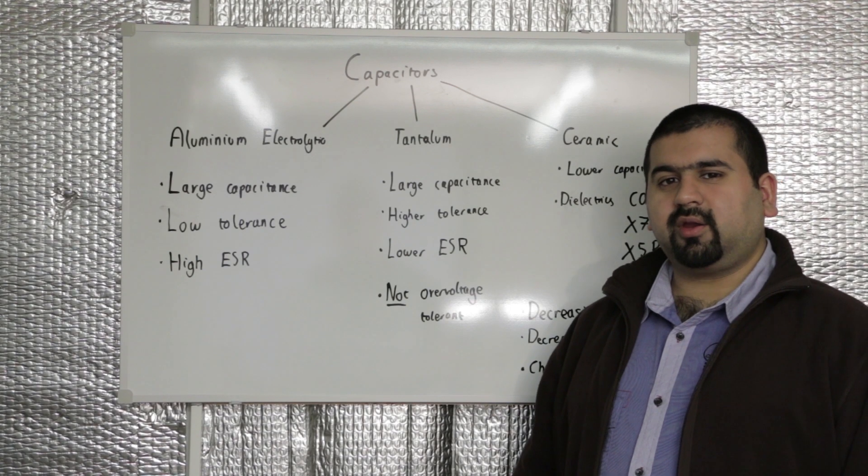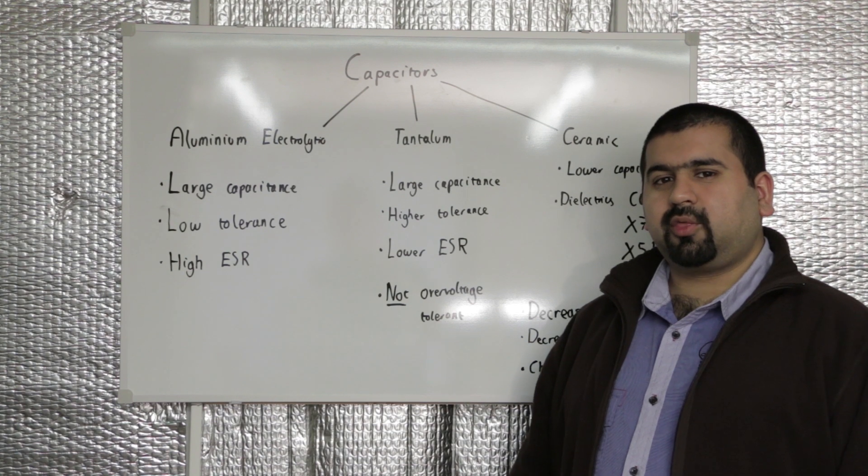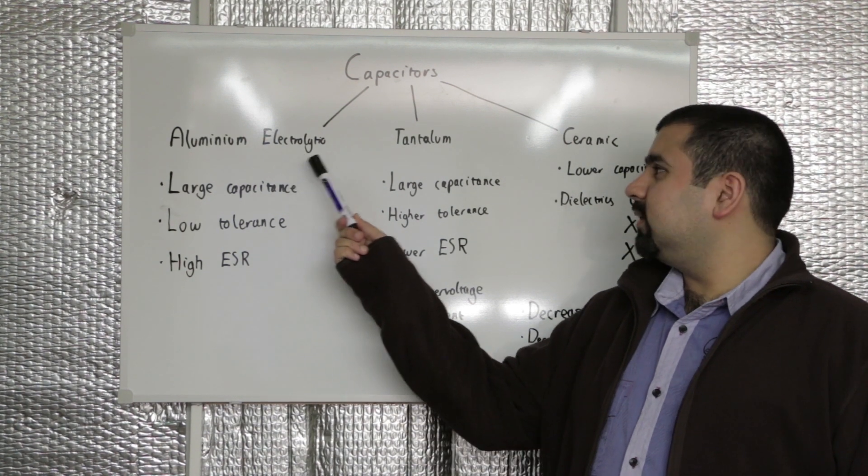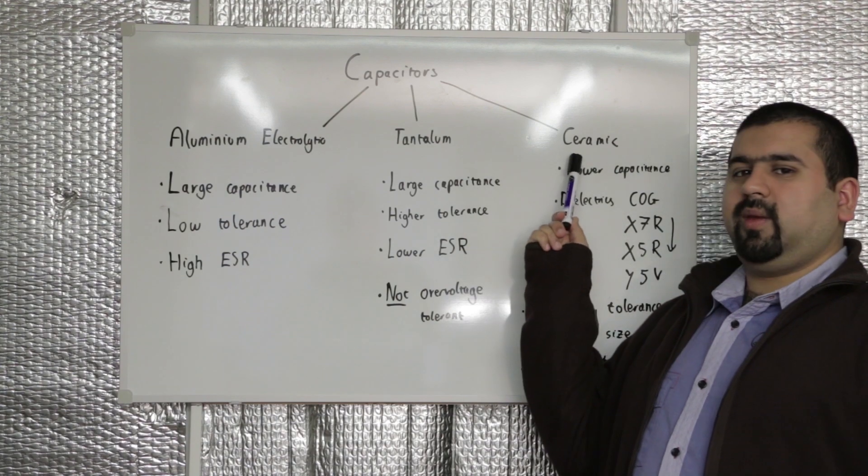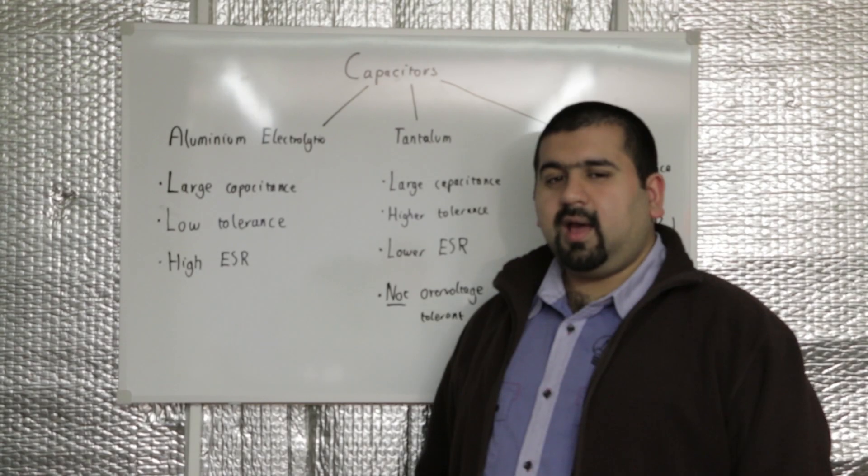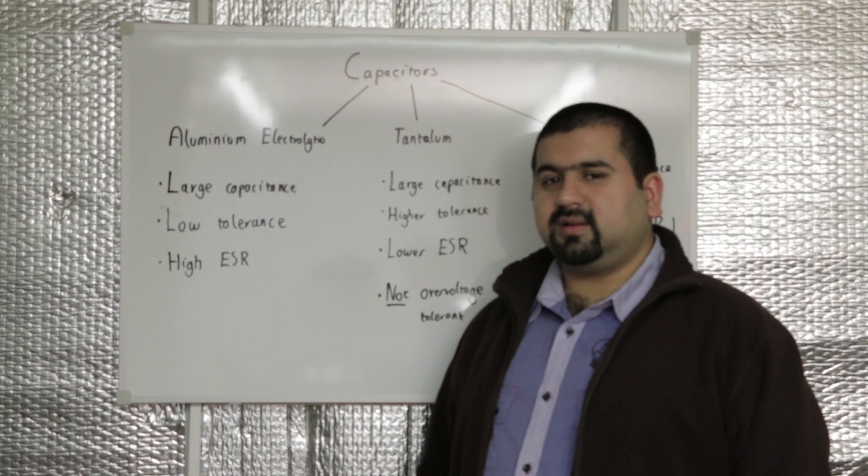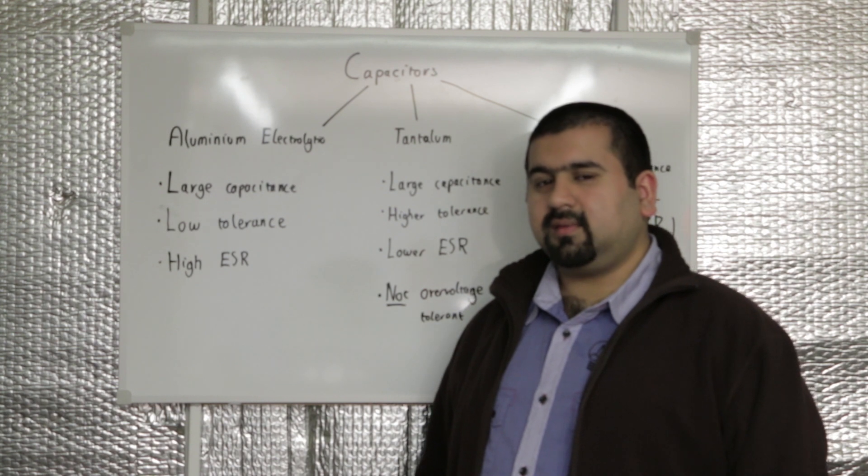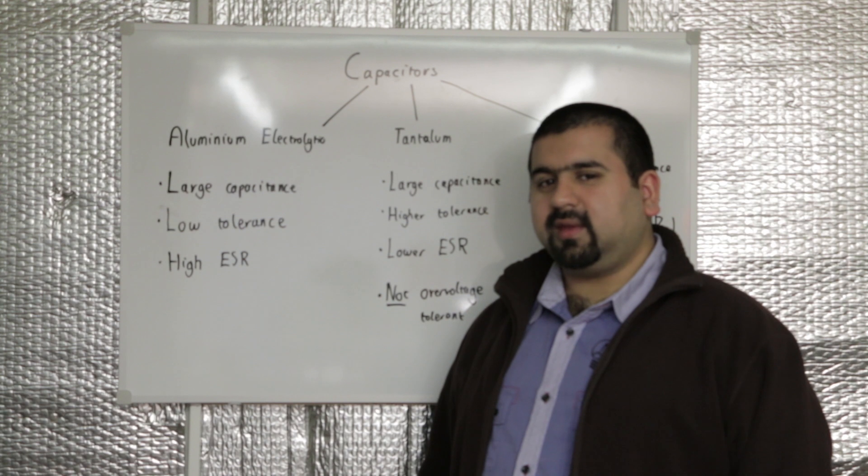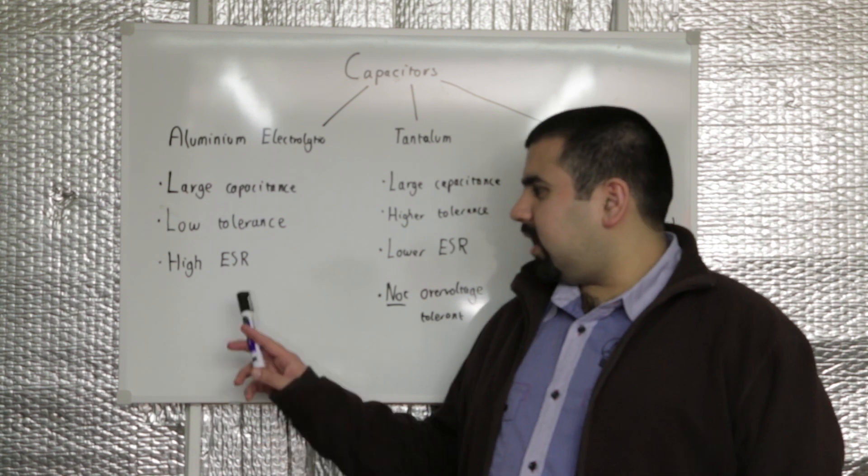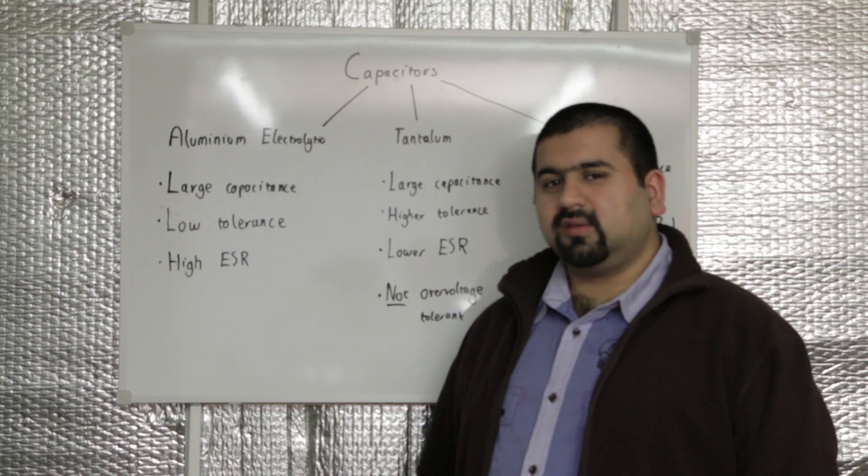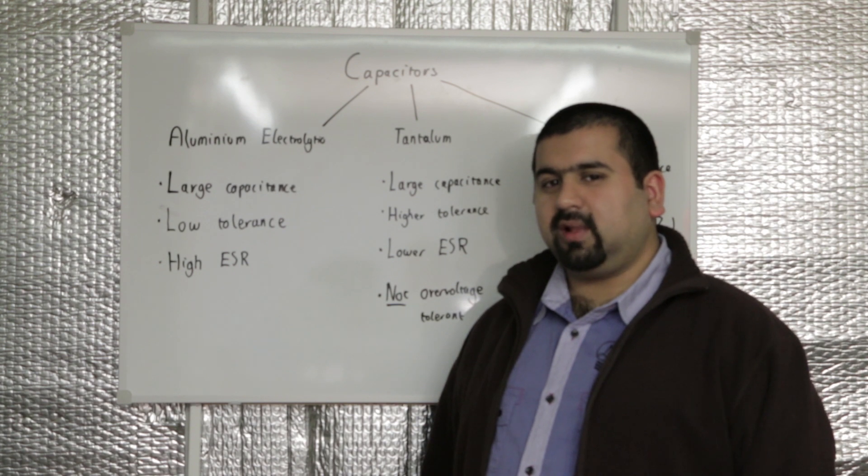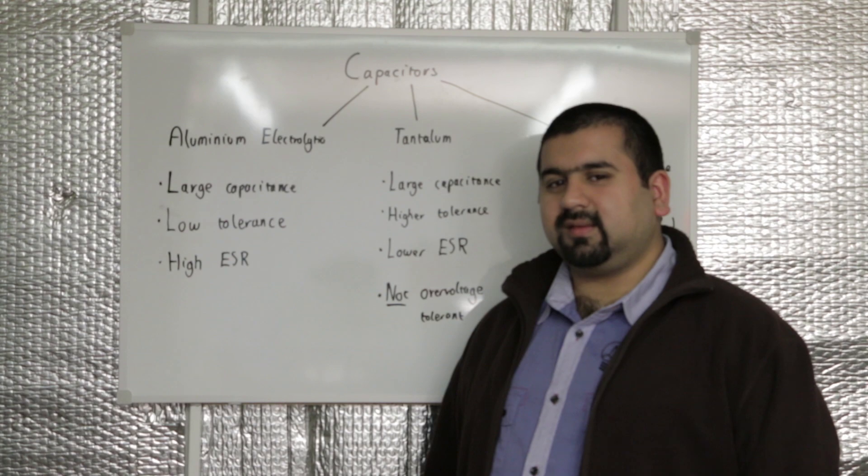Capacitors are one of the harder components to select. There are three main ones: aluminum electrolytic, tantalum, and ceramic. Aluminum electrolytic capacitors have a large capacitance relative to their size. They have a load tolerance, therefore you may want to use a larger value than calculated. They also have a high ESR. This means that when used in a circuit with large ripple currents, they will heat up. This can be reduced by using them with ceramic capacitors in parallel.